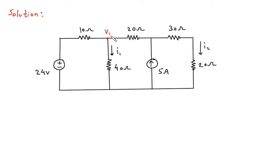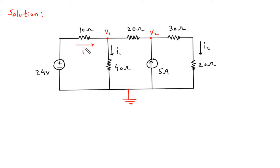Let's say this is node 1 with voltage V1, this is node 2 with voltage V2, and this is a reference node. This is current I3 and this is current I4.